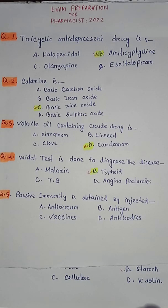Question number three: volatile oil containing crude drug is — option A cinnamon, option B linseed, option C clove, option D cardamom. So correct answer is option D cardamom.